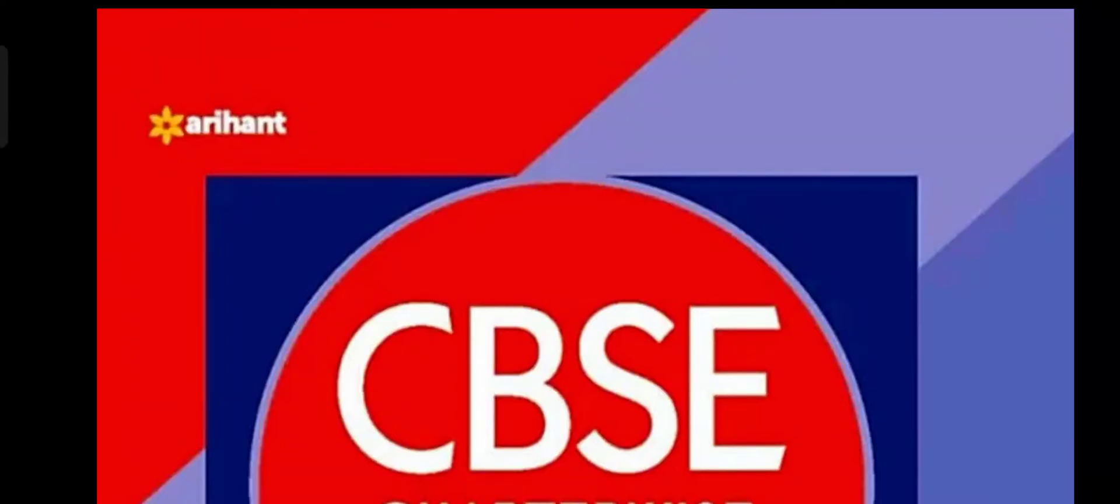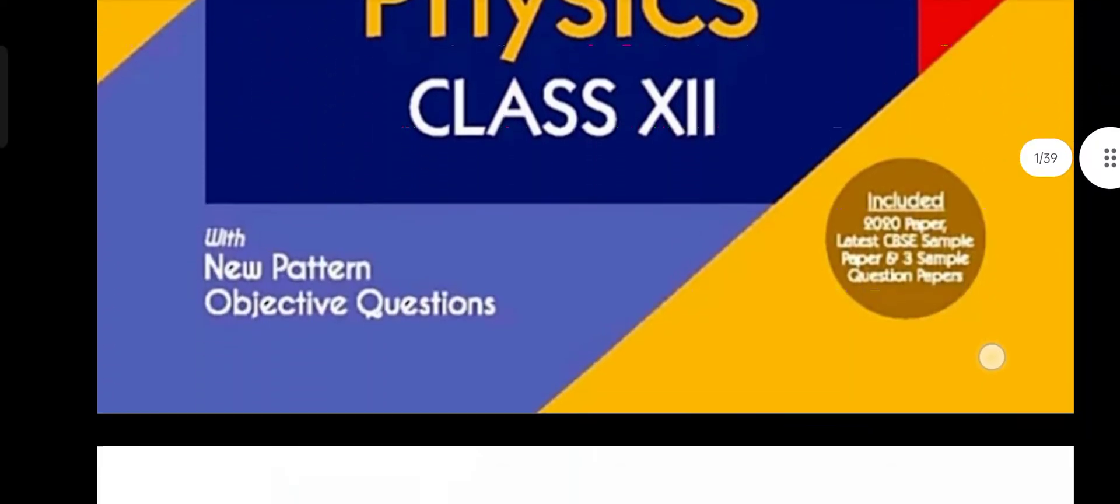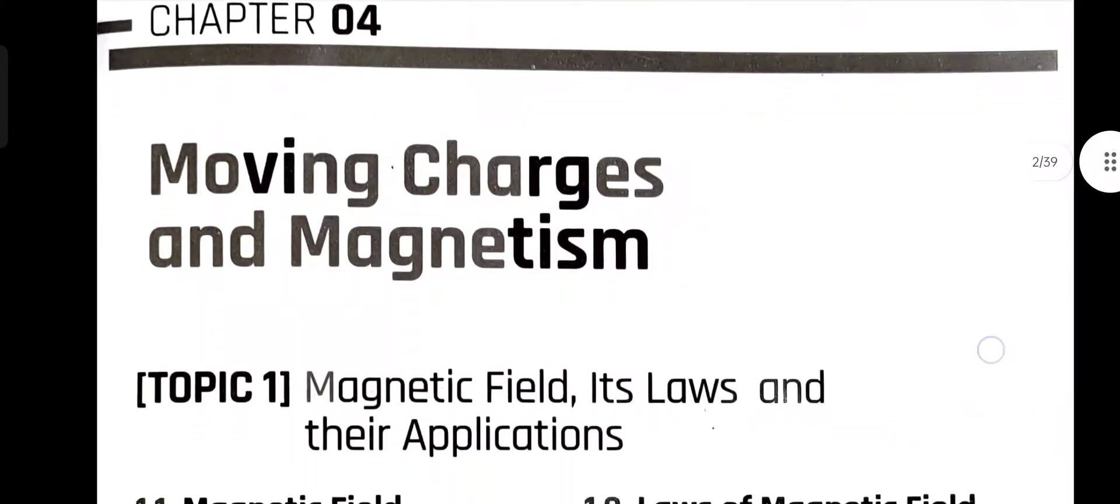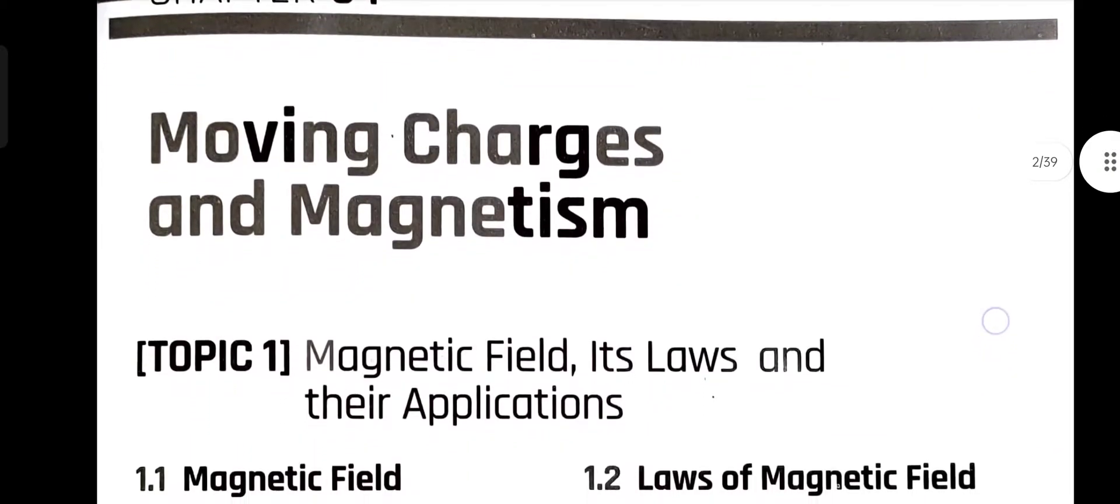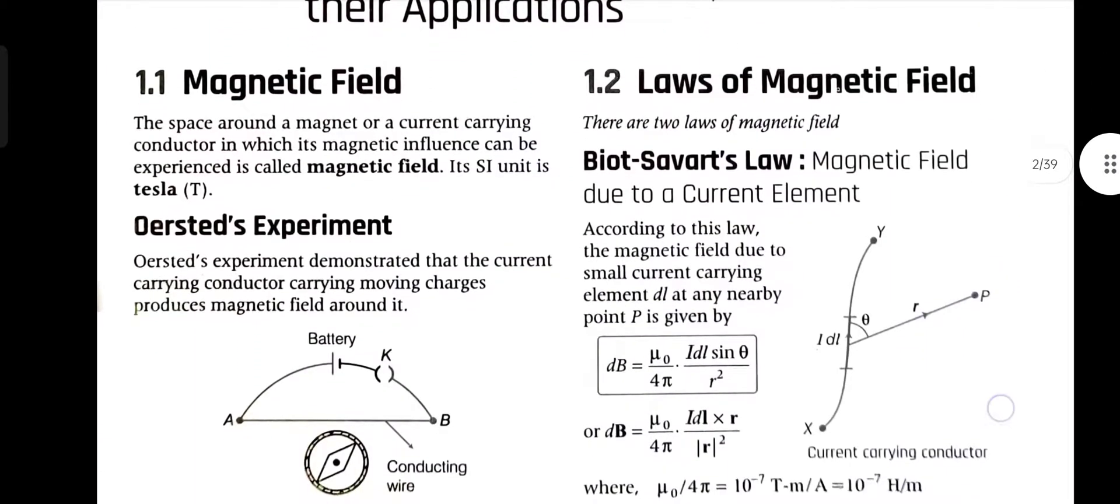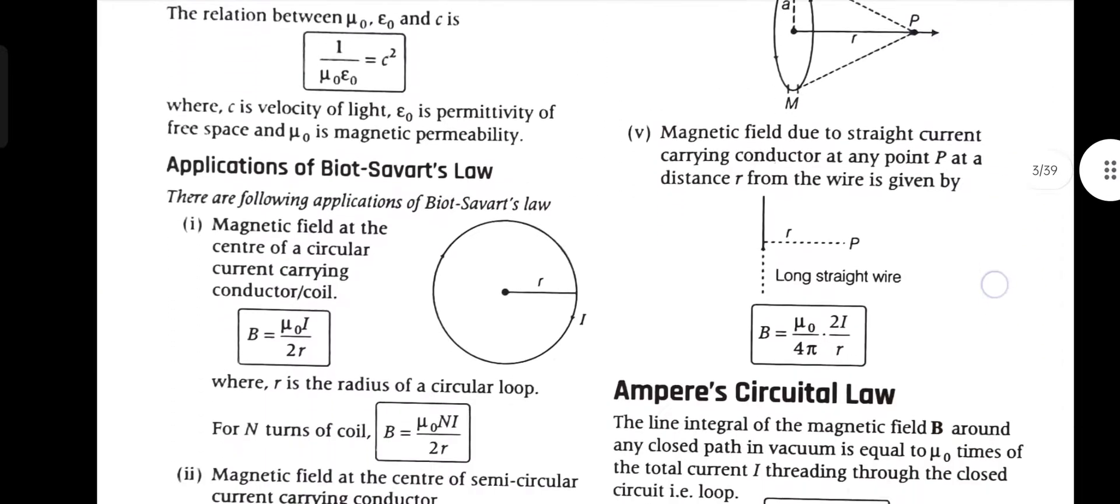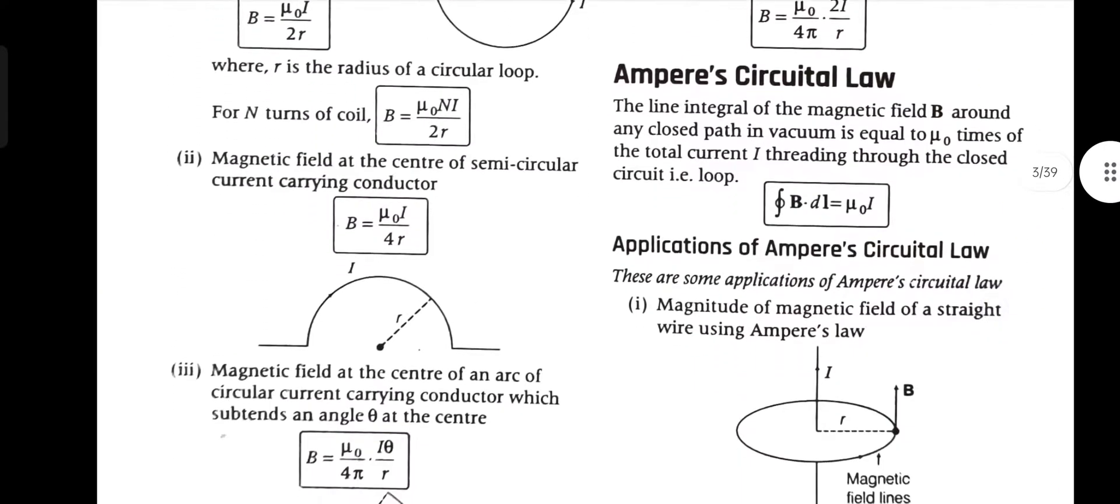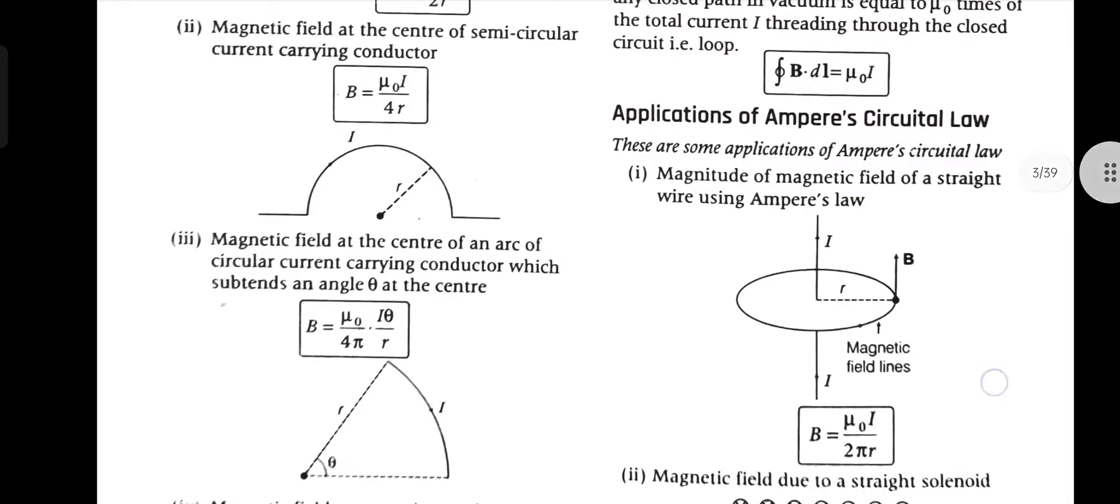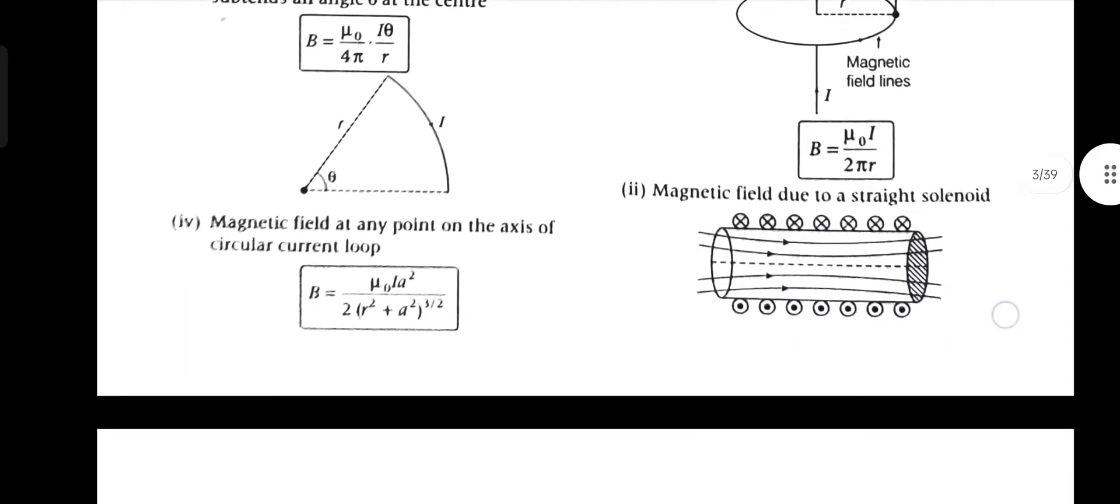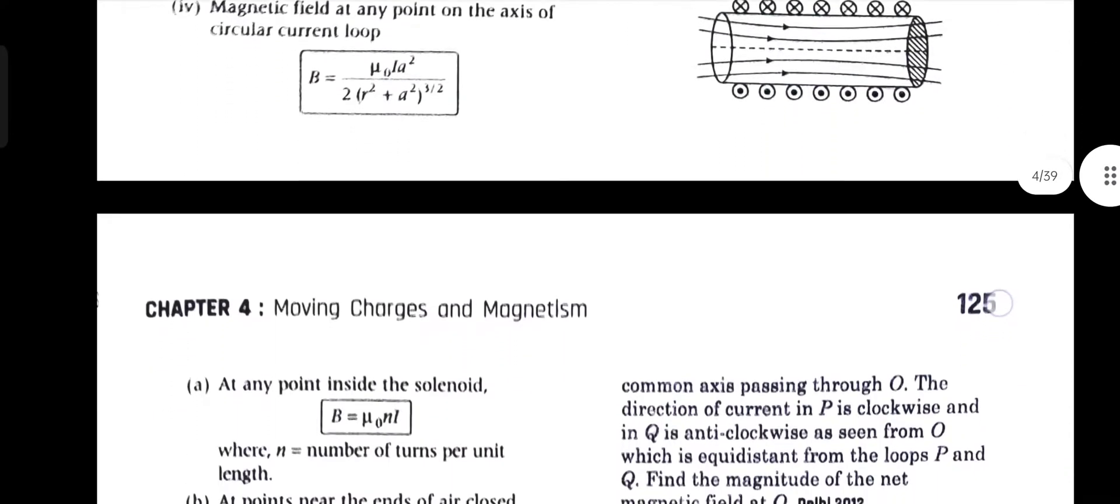Hello everyone and welcome to our channel ScienceWale. Today I will be providing you with the PDF of moving charges and magnetism. This PDF contains 40 pages and this chapter is part of book 1 of physics NCERT class 12th.